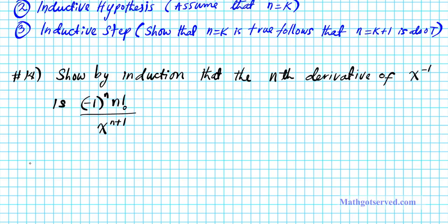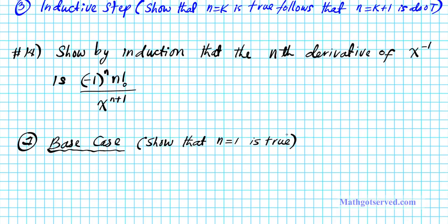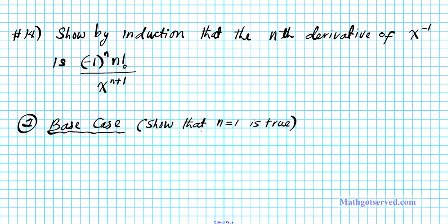Let's go ahead and start with part 1 — our base case. For our base case, we have to show that n equals 1 is true. So for n equals 1, we are looking at the first derivative. The statement in symbolic form is: the nth derivative d^n/dx^n of x to the negative 1 is equal to negative 1 to the n times n factorial over x to the n plus 1. This is basically what we are trying to show.